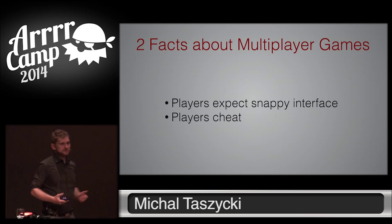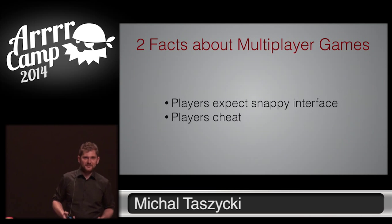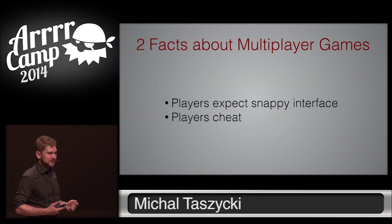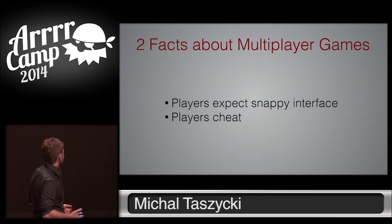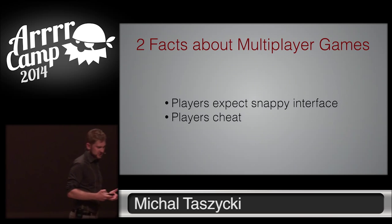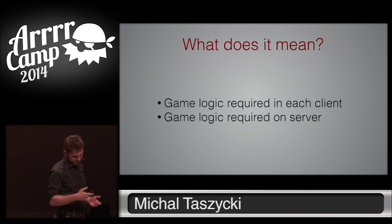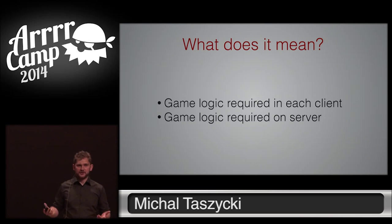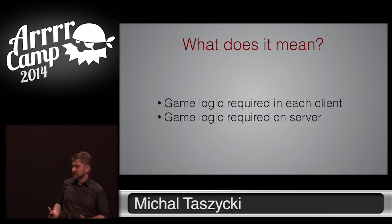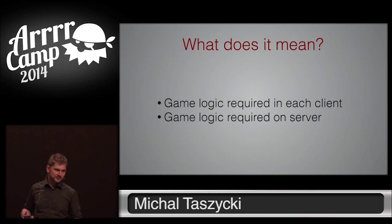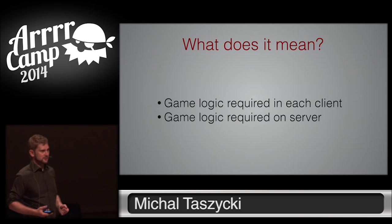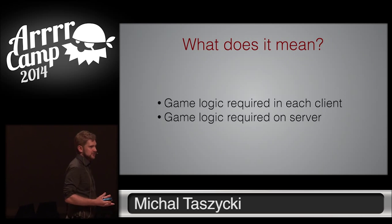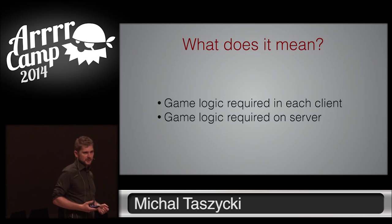There are two facts about multiplayer games. Players expect a snappy interface, and the other one is that players usually cheat. And what does it mean? The game logic, in this example a tic-tac-toe, has a couple of rules to win a game, to make a next move. So, the game logic needs to be implemented on each client in a multiplayer game, and also, because players cheat, the game logic needs to be implemented on the server.